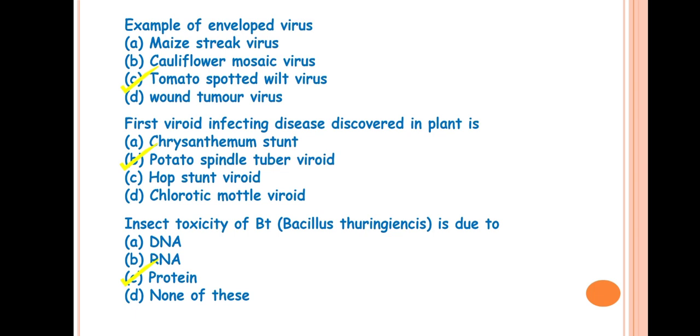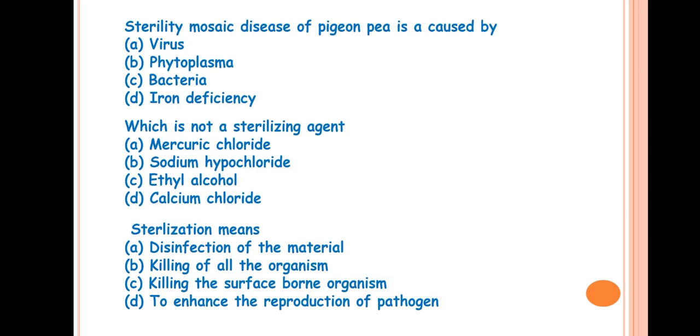Then how this toxin act? In fact, this toxin will activate in alkaline condition, that is the gut of the insect. Generally, inside the gut of the insect or the stomach of the insect, the pH is very high, that is alkaline pH. So, the toxin will activate and it acts on the lining of the gut and it disrupts its system and results in the death of the insect.